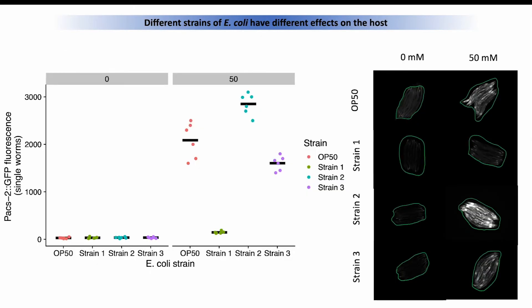Using this readout, we can start testing with worms and with E. coli strains. In control conditions, we barely have any brightness, as you can check in the zero millimolar metformin column. However, in the presence of metformin, the effects are quite different between the strains. Some strains are very bright, but we also have examples in which the effect of metformin is not really that strong. You can also check that in the pictures on the right side of the slide.